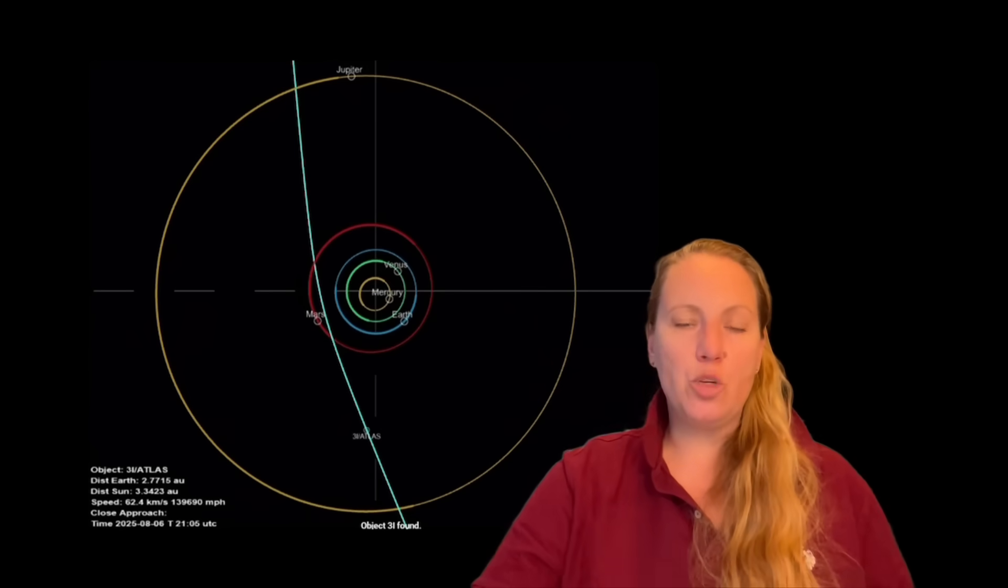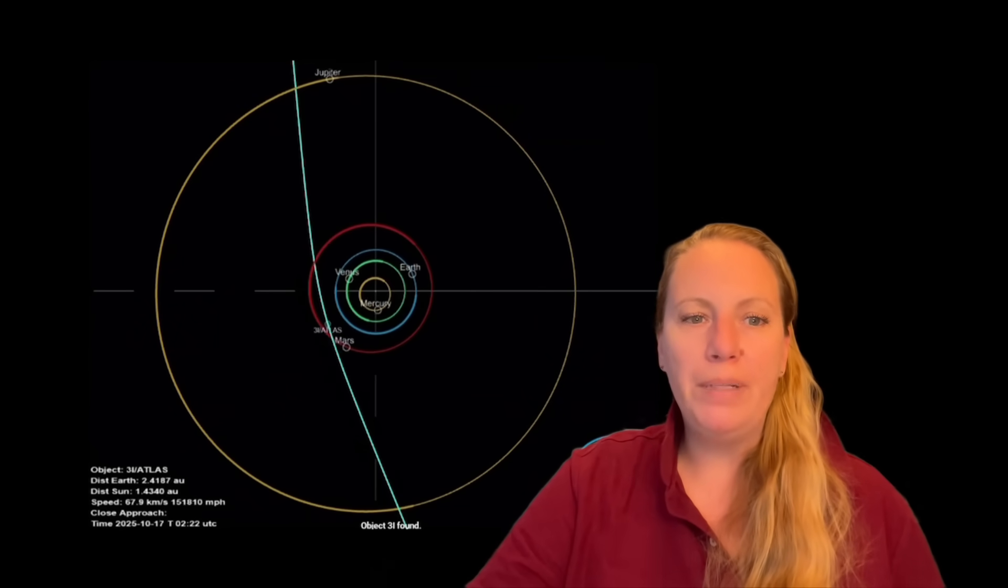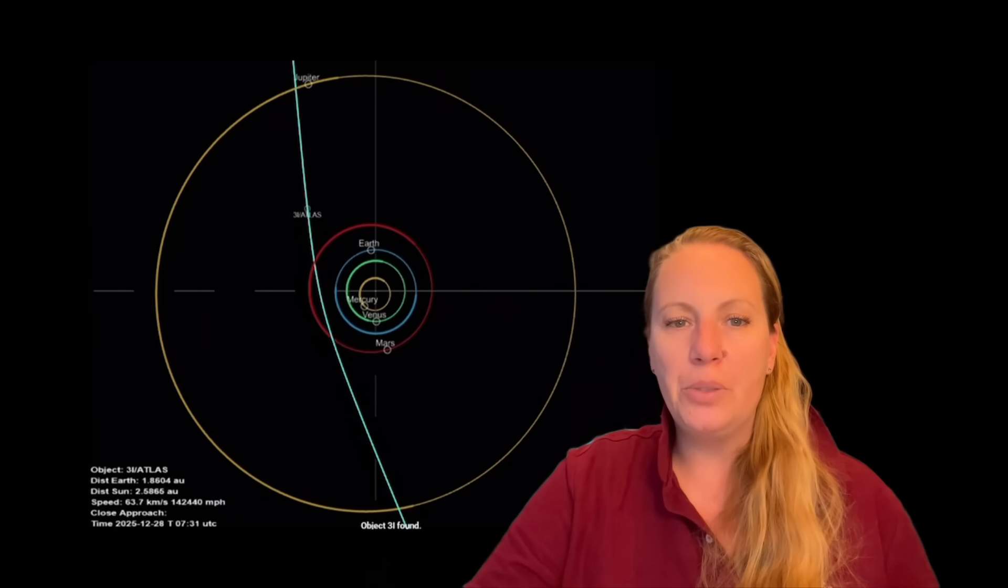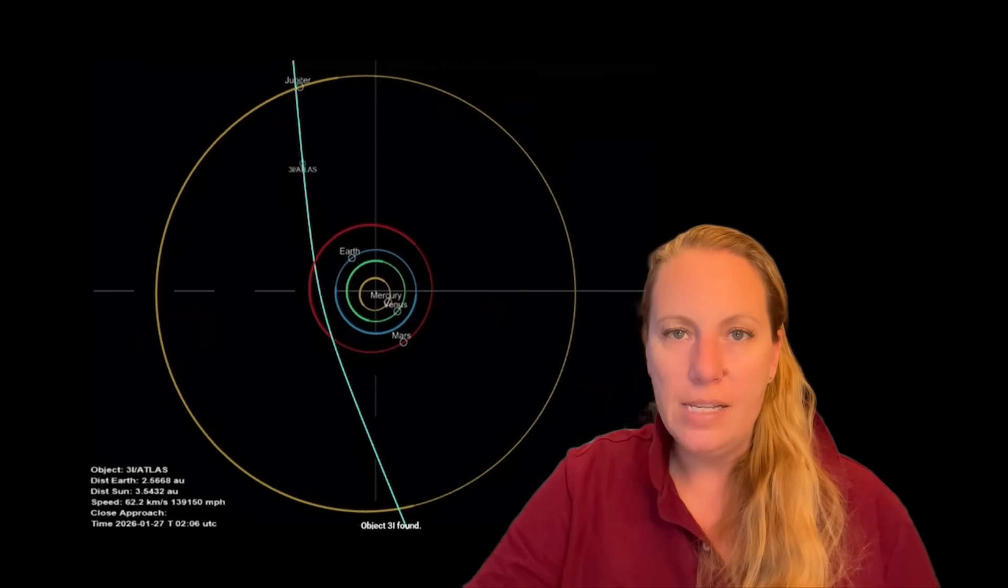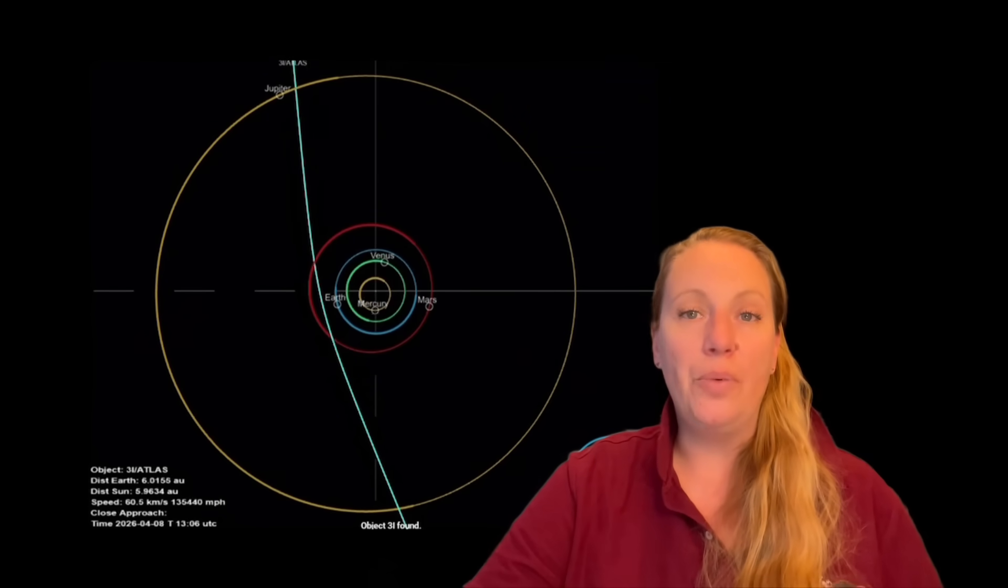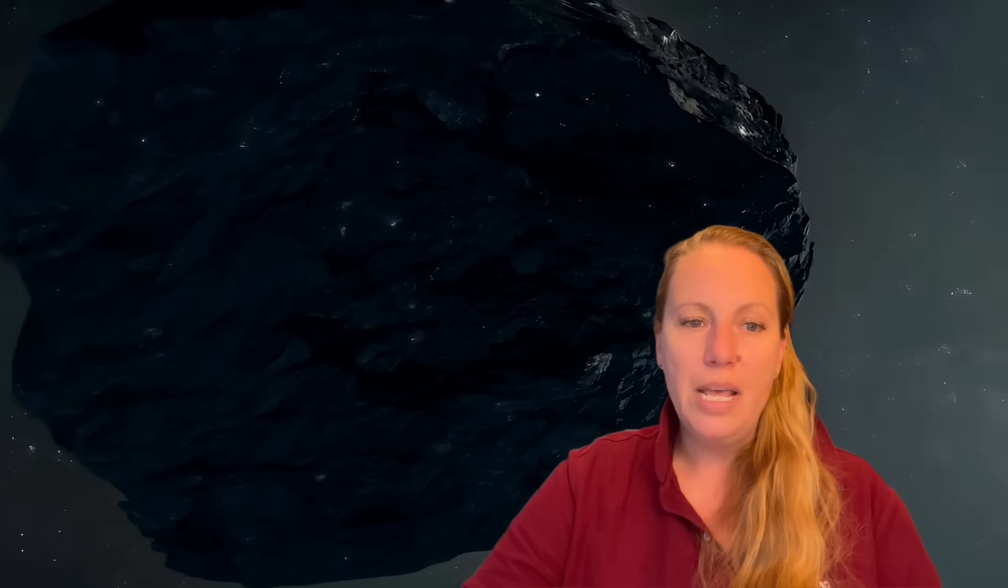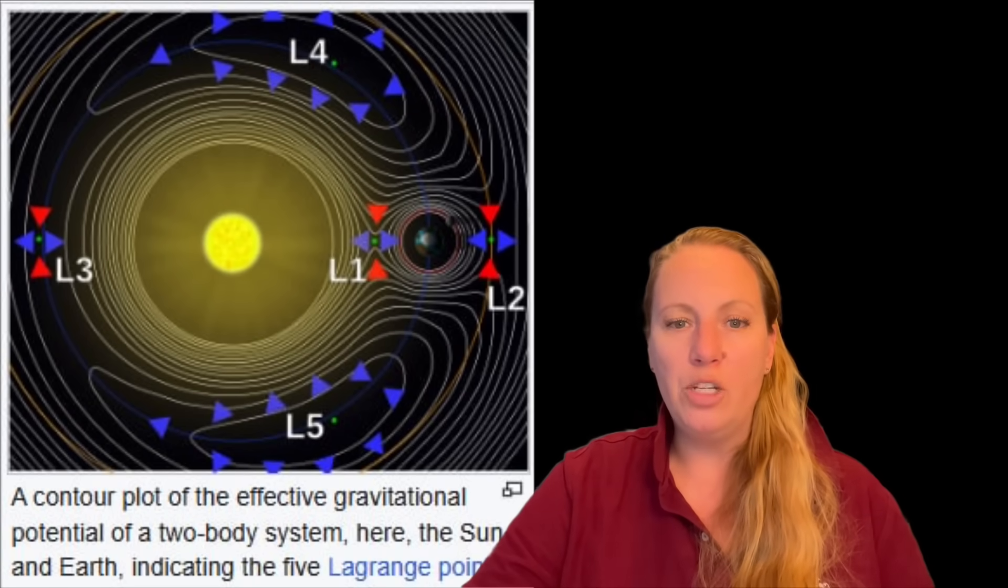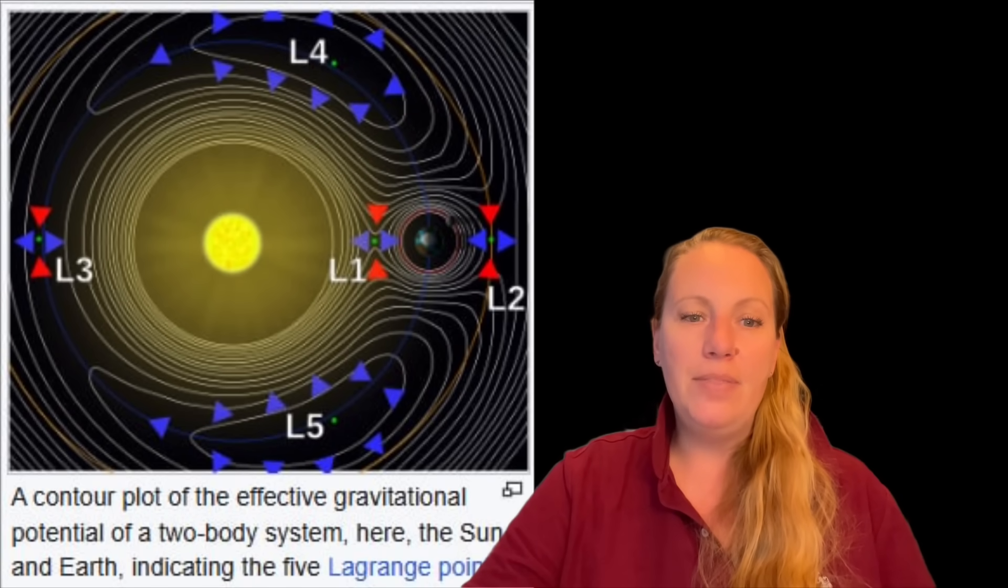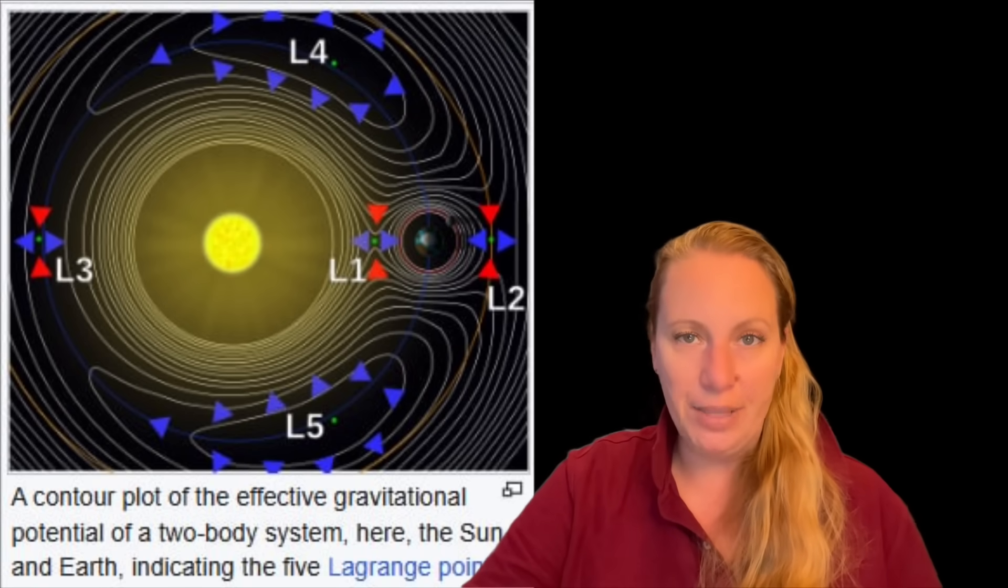So if the match between Atlas and the Hill radius remains real, the probability of this happening by chance is less than 0.00004. So zero, basically. In that case, 3i Atlas could theoretically release technological devices near Jupiter, possibly at the L1 and L2 Lagrange point, where they need minimal fuel to stay in place. And this would be the most extreme anomaly so far. And I feel that too.